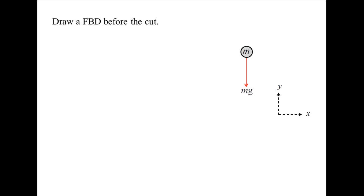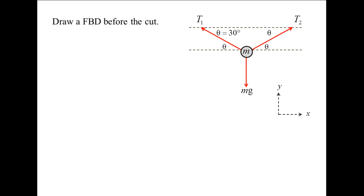The weight points downward and has a magnitude of m times g, the gravitational acceleration constant. The tension in wire 1 has a magnitude of T1 and the tension in wire 2 has a magnitude of T2. Both tensions are oriented at an angle theta from the horizontal.